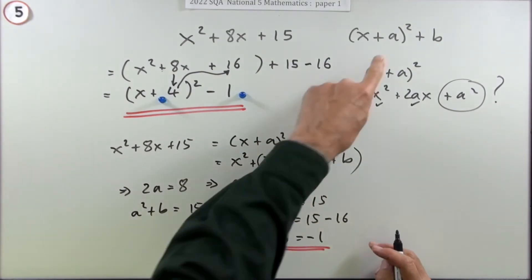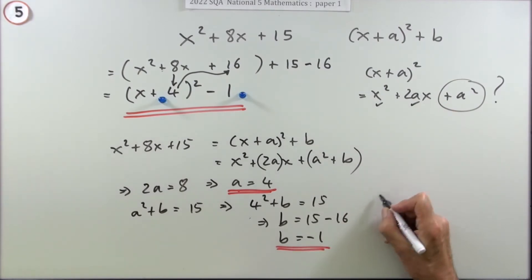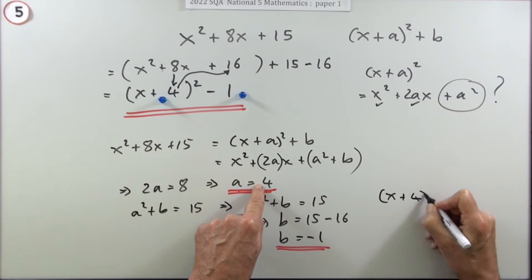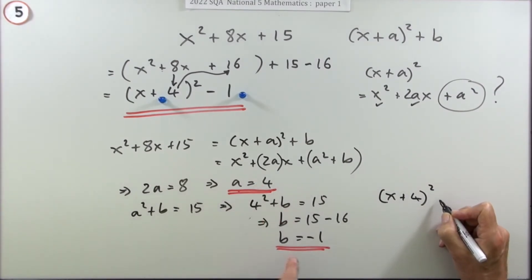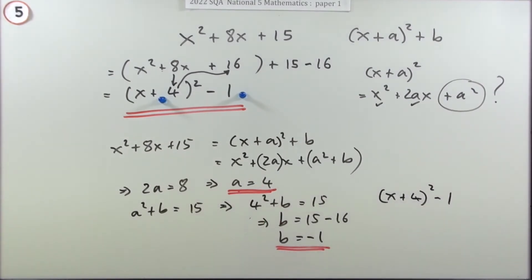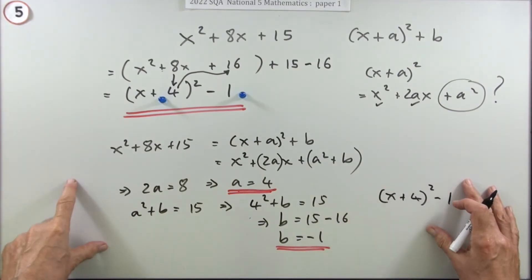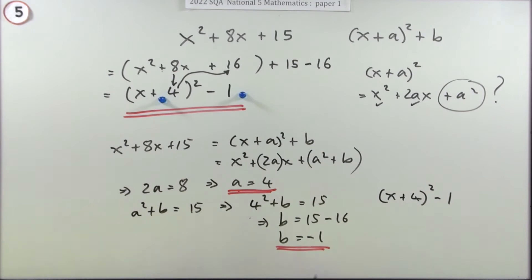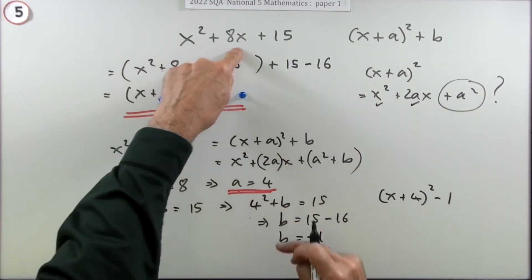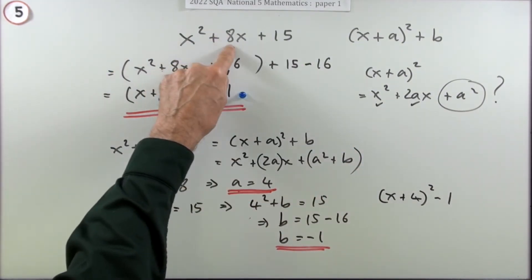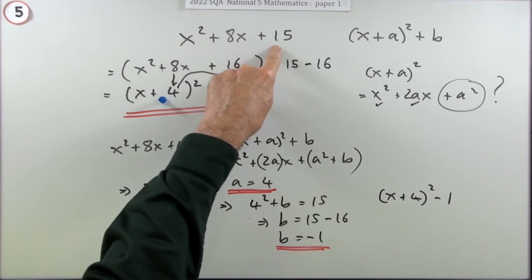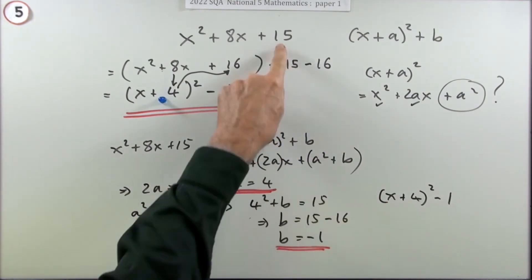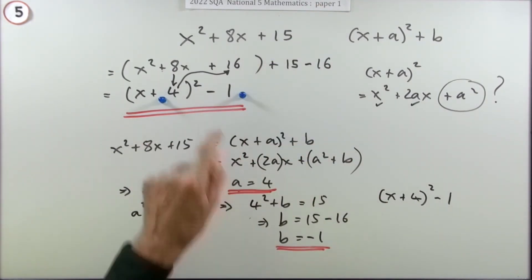Since the question asks to express it in that form rather than just find a and b, you finish by writing x plus 4 (since a was 4) plus b, but b was minus 1, so minus 1. You wouldn't normally need to do it this algebraic way - you'd just work with the numbers directly and say: I need a 16 to go with that, but I've only got 15, so I'm one short of a perfect square.